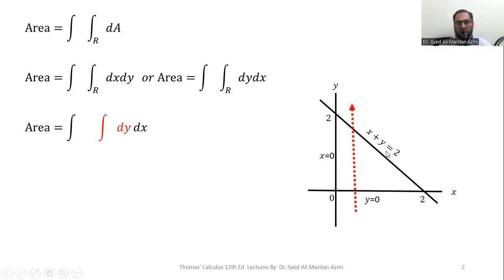This arrow enters the boundary y equal to 0 and exits at the boundary where the value of y is 2 minus x. So from here we will get the limits of our inner variable y is 0 to 2 minus x. For the outer variable we will always check the range of region along that particular axis. Along x-axis our region starts from 0 and ends at 2. So the limits of x are 0 to 2.